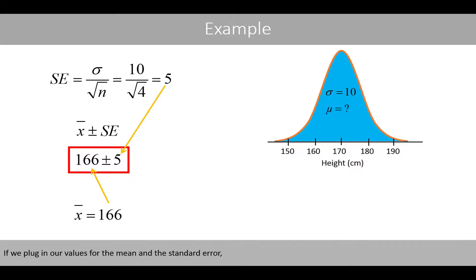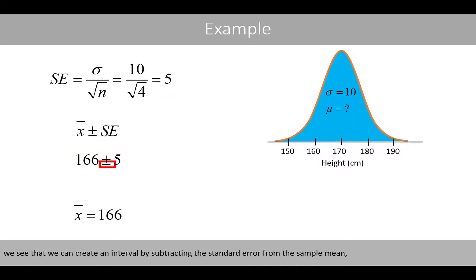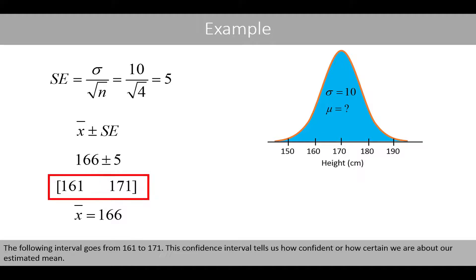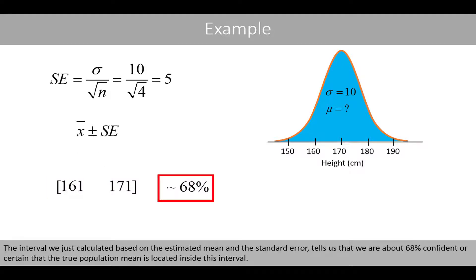If we plug in our values for the mean and the standard error, we see that we can create an interval by subtracting the standard error from the sample mean and by adding the standard error to the sample mean. 166 minus 5 is equal to 161, and 166 plus 5 is equal to 171. The following interval goes from 161 to 171. This confidence interval tells us how confident or how certain we are about the estimated mean. The interval we just created, based on the estimated mean and the standard error, tells us that we are about 68% confident that the true population mean is located inside this interval.